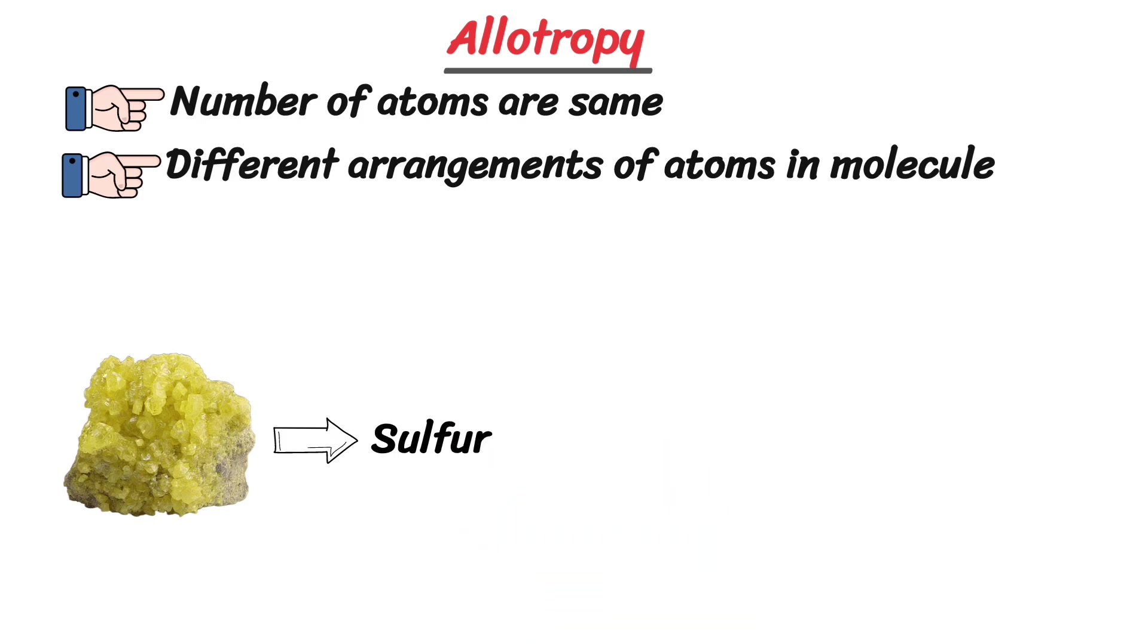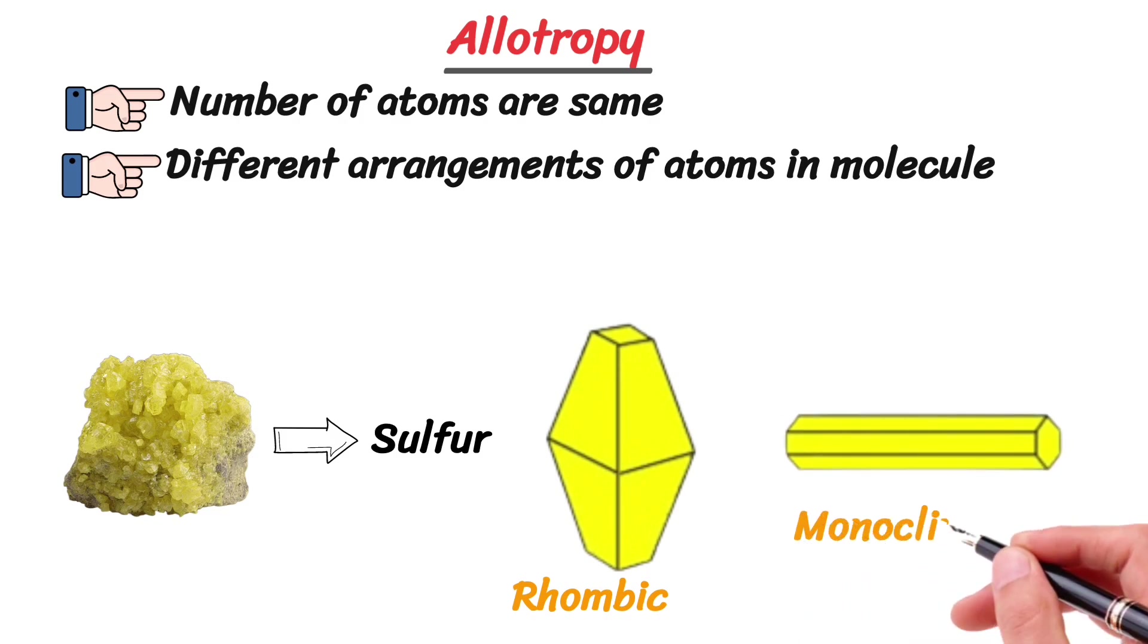I have an example for you. Sulfur can exist in several allotropes. The most common allotropes are rhombic and monoclinic sulfur. Both allotropes contain same number of atoms but different in their arrangement.